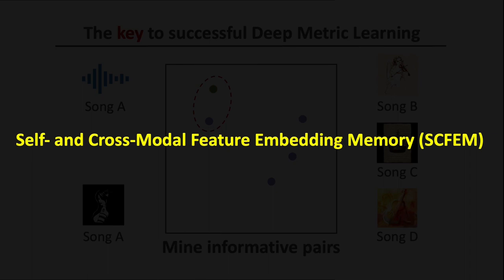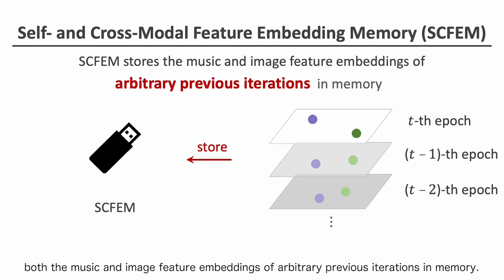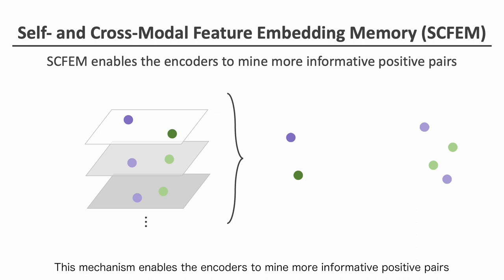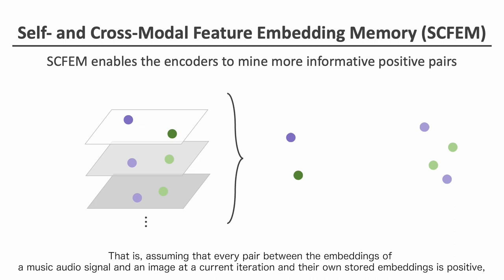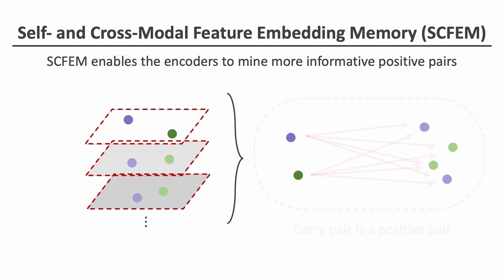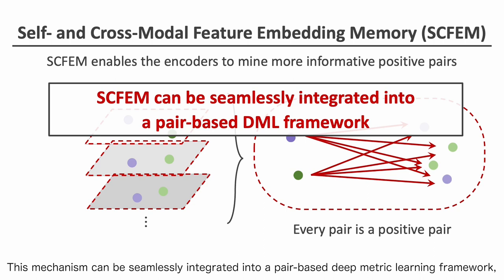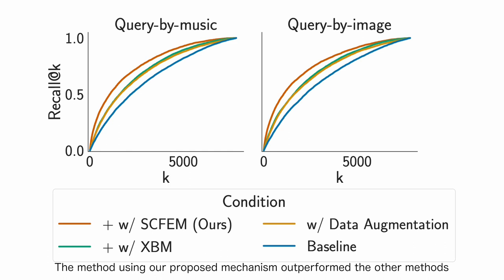To overcome this bottleneck, we propose a self- and cross-modal feature embedding memory mechanism. This mechanism stores both the music and image feature embeddings of arbitrary previous iterations in memory. The embeddings stored in memory can be used directly while training, enabling the encoders to mine more informative positive pairs in addition to informative negative pairs. That is, assuming that every pair between the embeddings of a music audio signal and an image at a current iteration and their own stored embeddings is positive, our mechanism enables the encoders to obtain additional informative positive pairs. This mechanism can be seamlessly integrated into a pair-based Deep Metric Learning framework and can perform with a small amount of computational resources.